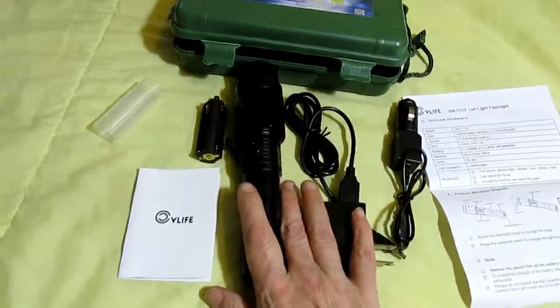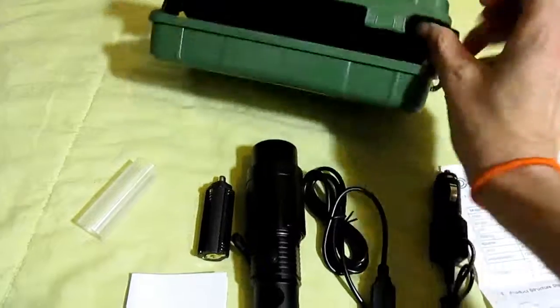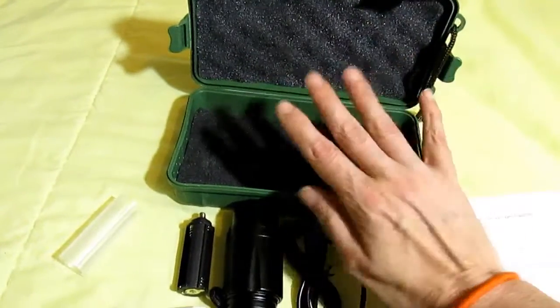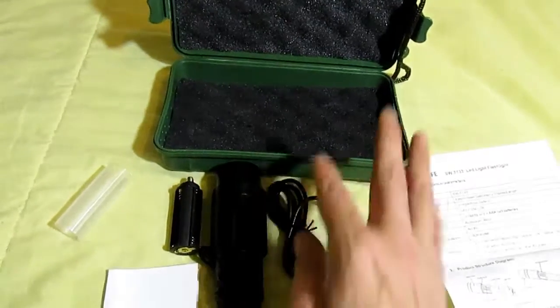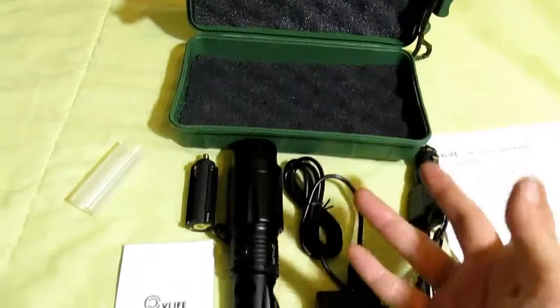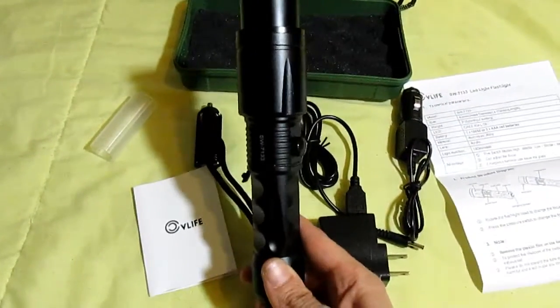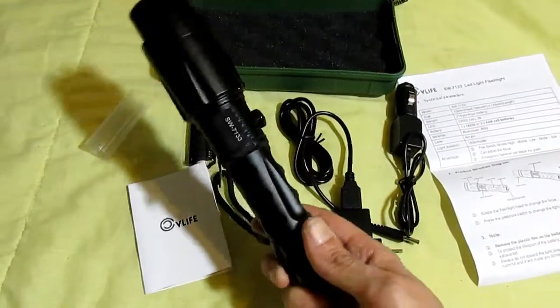And then it comes in a box. Everything just fits all in here. So you can put it in a drawer, charge the battery, put it in a drawer. And if you have a power outage or you need to go outside, you've got a flashlight wherever you put it.